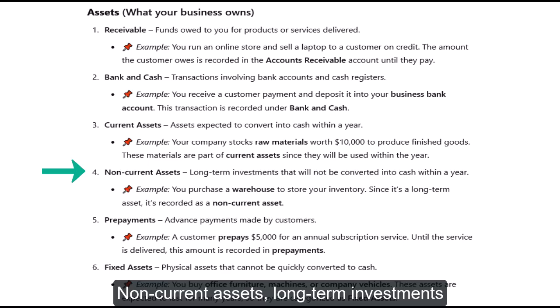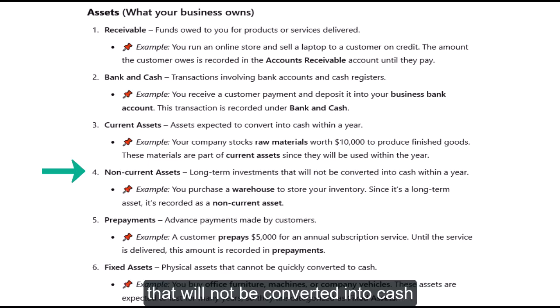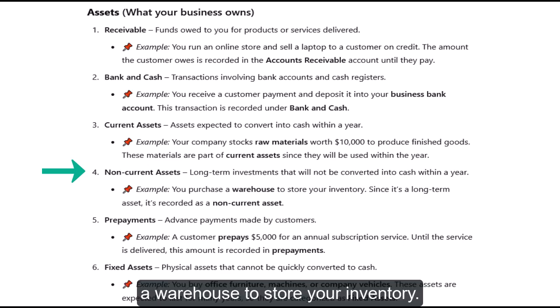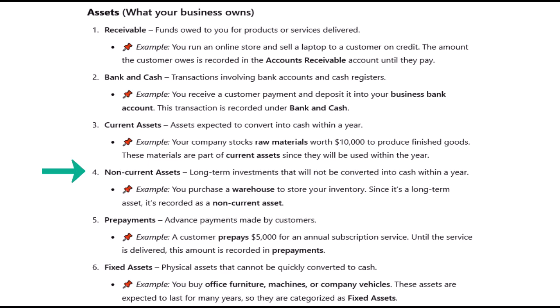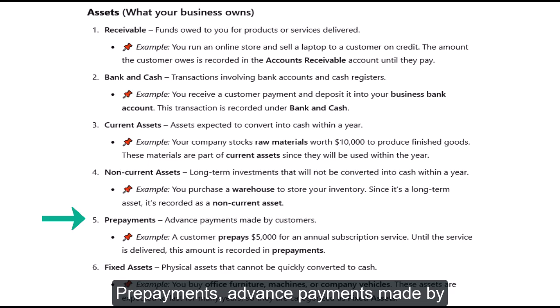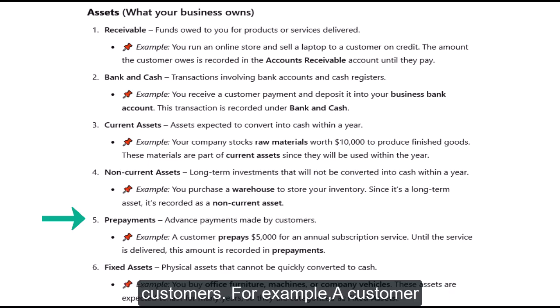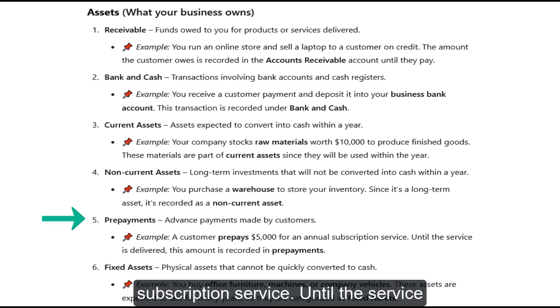Non-current Assets: long-term investments that will not be converted into cash within a year. For example, you purchase a warehouse to store your inventory. Since it's a long-term asset, it's recorded as a non-current asset. Prepayments: advanced payments made by customers. For example, a customer prepays $5,000 for an annual subscription service. Until the service is delivered, this amount is recorded in prepayments.